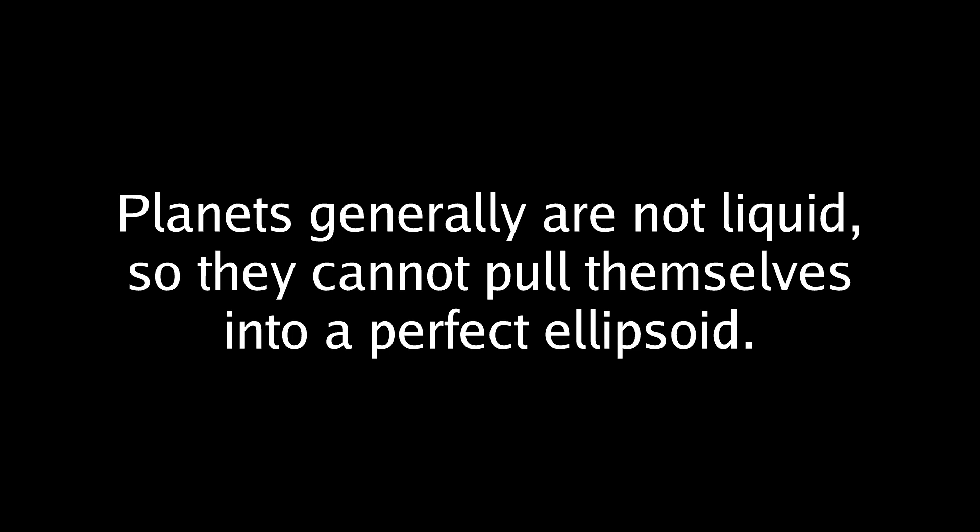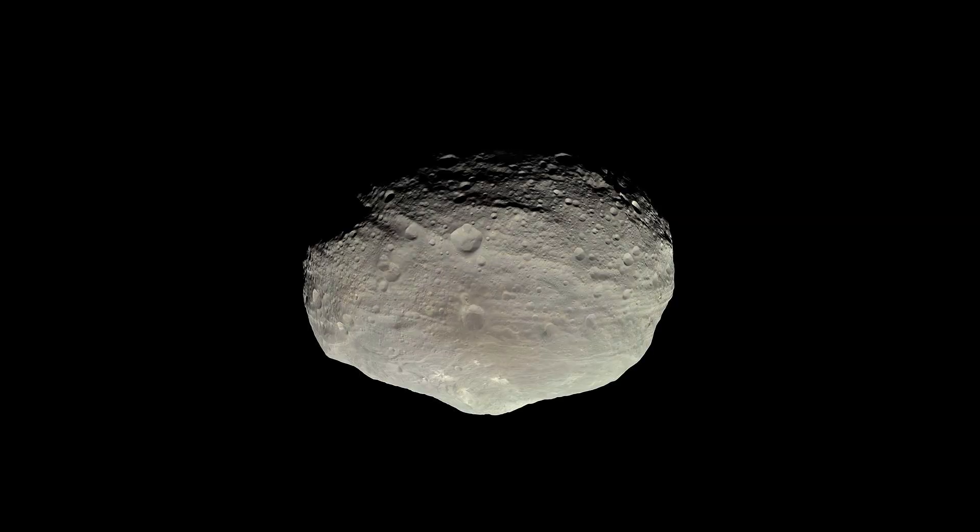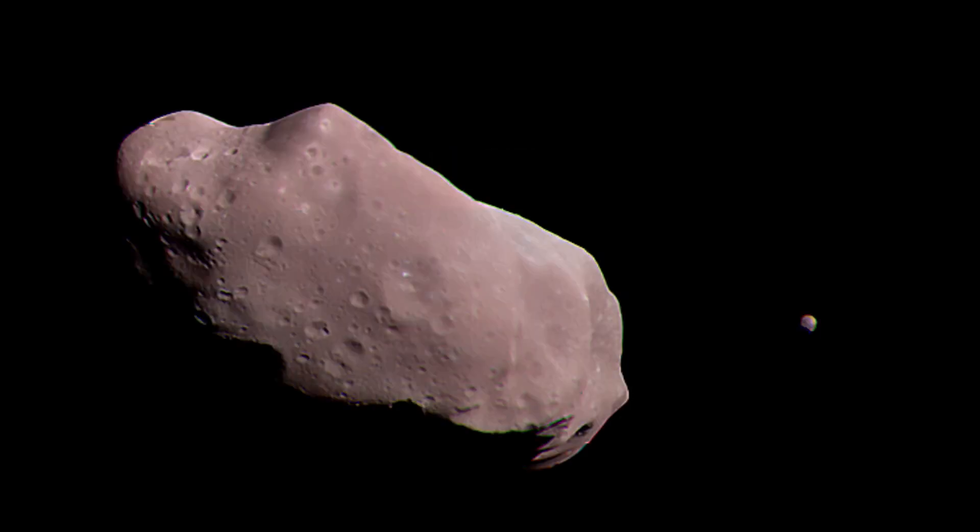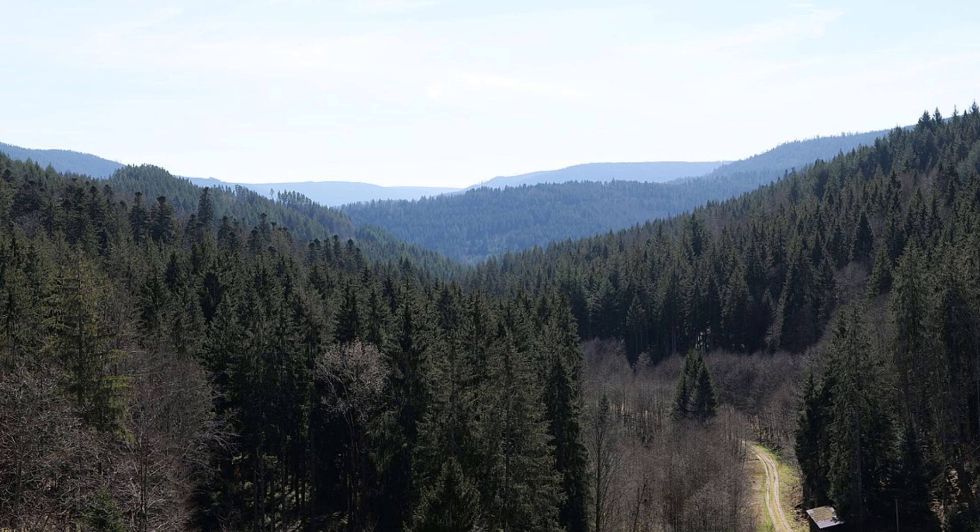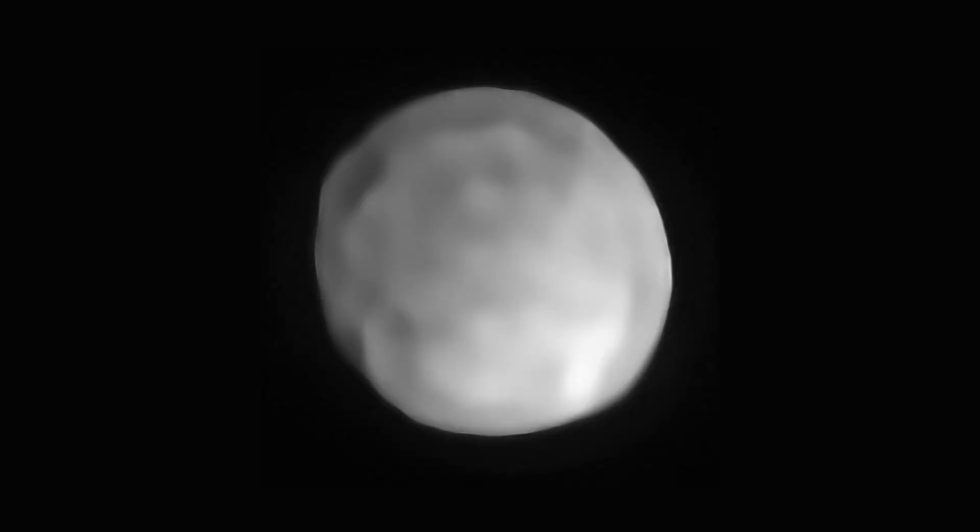Of course, planets are not always made of liquid, so if they don't have enough gravity, they cannot pull themselves into a perfect ellipsoid, leaving you with potato-shaped asteroids, which I don't think anyone would call planets. But how round must a body be to be round? The Earth has mountains and valleys, meaning it is not perfectly smooth, but we consider it round enough to be a planet. Is the asteroid Hygiea round? It looks roundish.